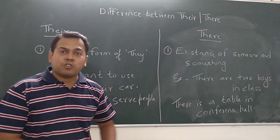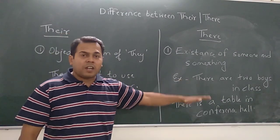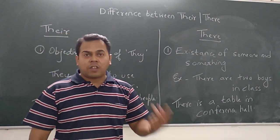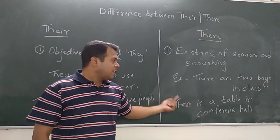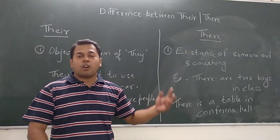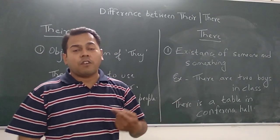So I hope you have understood the exact usage of there. There is used to show the existence of someone and something. In the first example, there are two boys in class shows the existence of someone. And second, there is a table in a conference hall shows the existence of something.